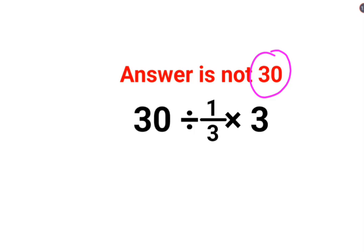The reason for that is, a lot of people when looking at this question thought that this and this will get cancelled. So you are getting 30 divided by 1, and that is how you get the answer as 30. No, that doesn't work. Why doesn't it work?